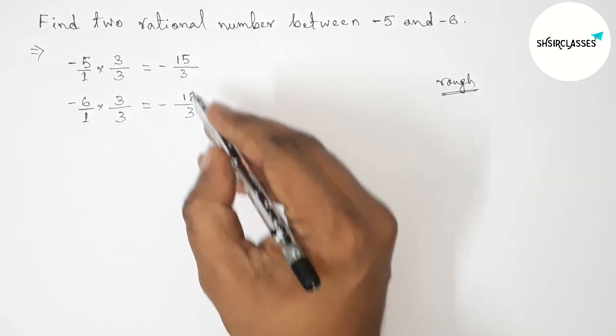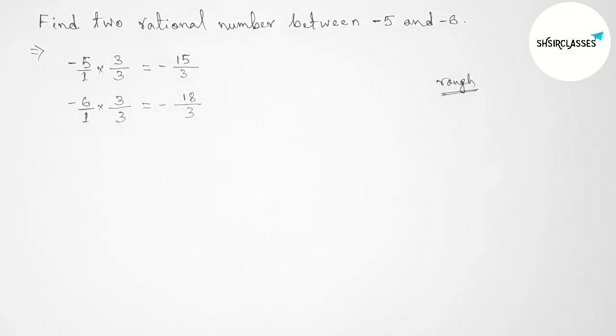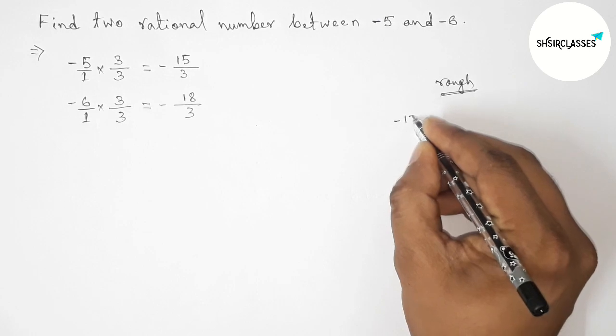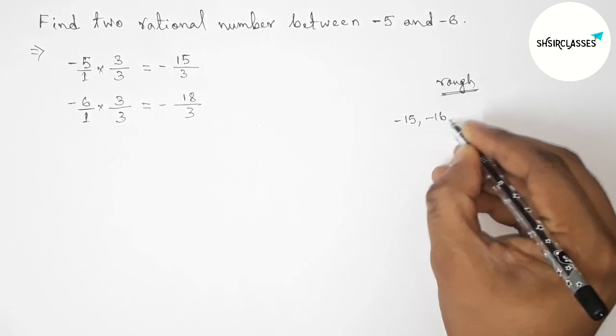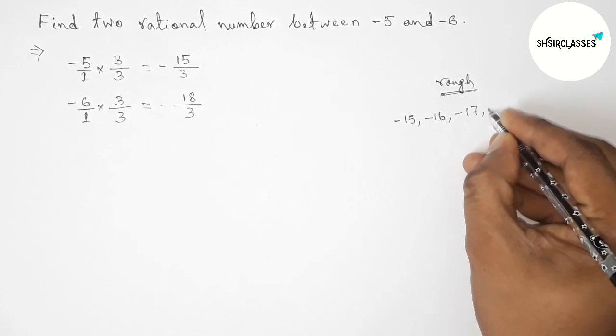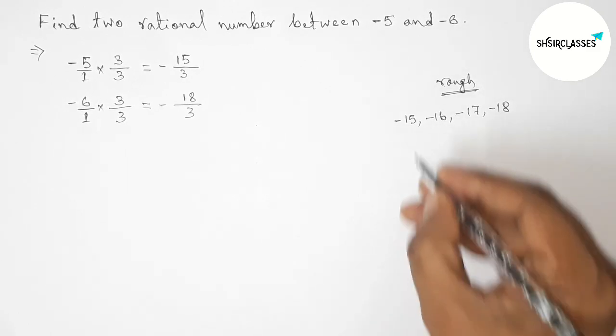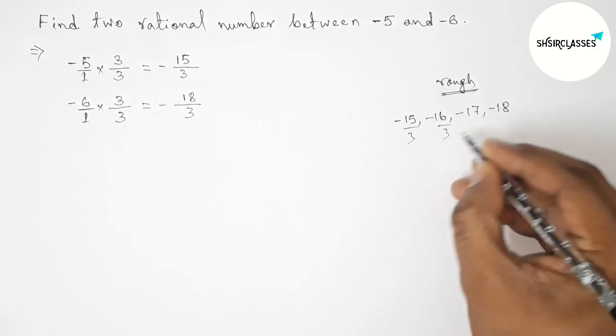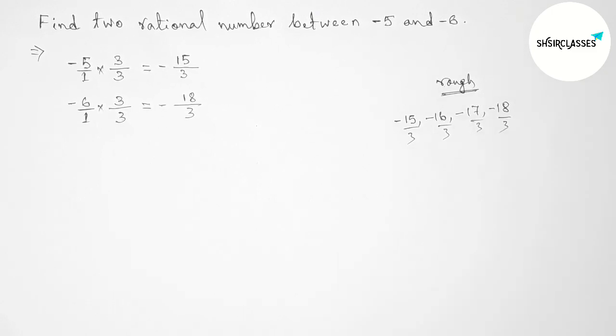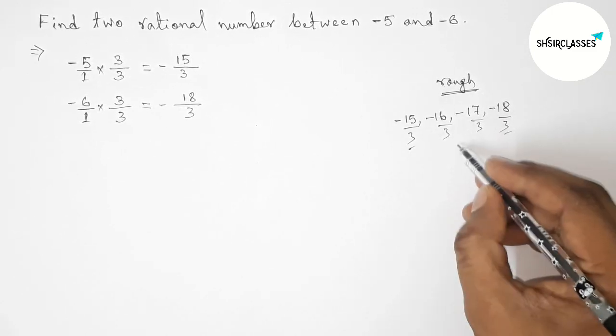Here both denominators are the same. Between -15 and -18, we can get two negative integers: -16 and -17. Now forming all the rational numbers between these.